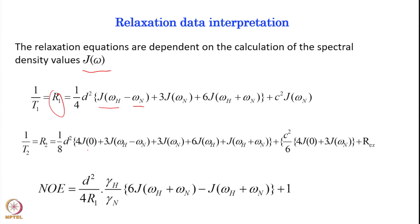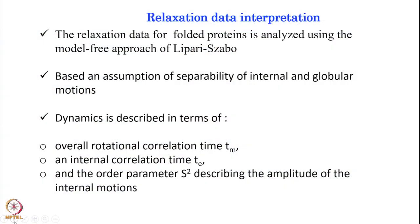R2 can also be written in terms of the spectral density function — at frequency zero, at the hydrogen frequency, at the nitrogen frequency, and so forth. R2 also has a component Rex. Similarly, the NOE can be written in terms of the spectral density function. Essentially, all relaxation equations depend on spectral density, and vice versa, these measurements allow us to calculate the spectral density function.